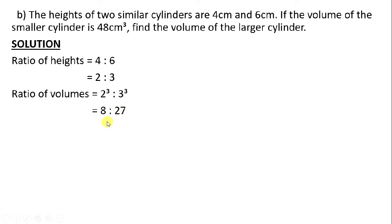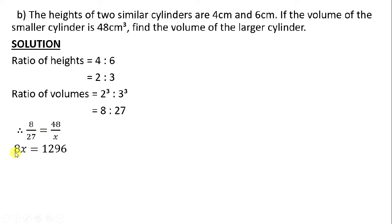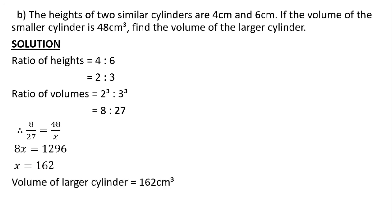Now equate the ratios: 8 corresponds to the smaller volume of 48 cm³, and 27 corresponds to the unknown larger volume x. Since similar figures are in direct proportion, cross multiply: 8x = 27 × 48 = 1296. Dividing both sides by 8, x = 162. Therefore the volume of the larger cylinder is 162 cm³.